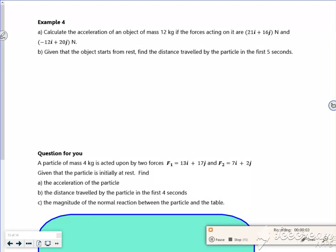Right then, are we ready? So it says example 4. Calculate the acceleration of an object with a mass of 12 kilos if the forces acting on it are 21i plus 16j and minus 12i plus 20j.